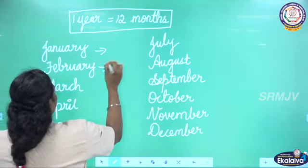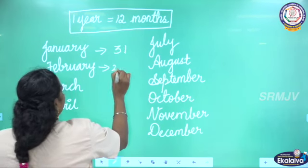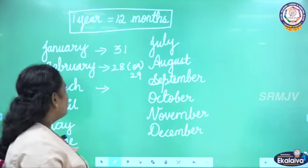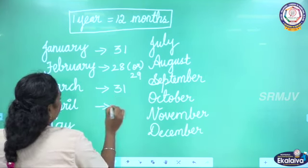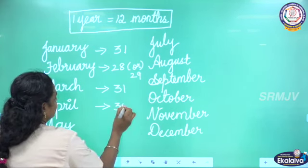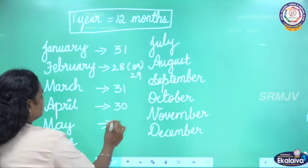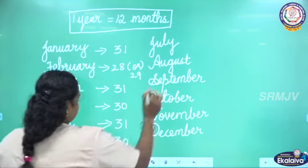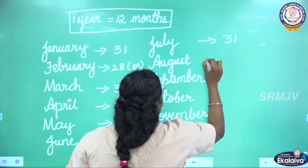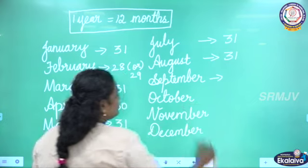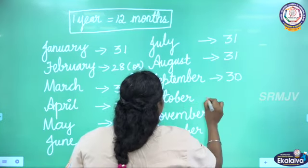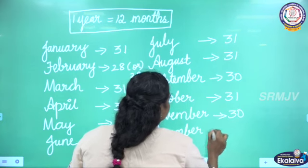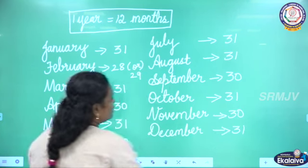Days in each month: January has 31 days, February has 28 or 29 days, March has 31 days, April has 30 days, May has 31 days, June has 30 days, July has 31 days, August has 31 days, September has 30 days, October has 31 days, November has 30 days, and December has 31 days. There are 12 months in a year.